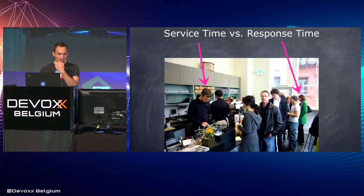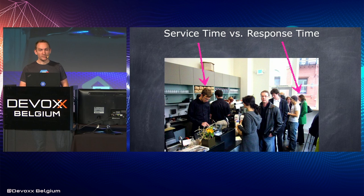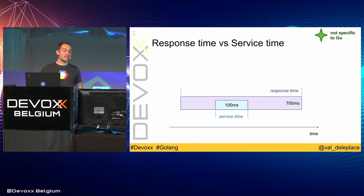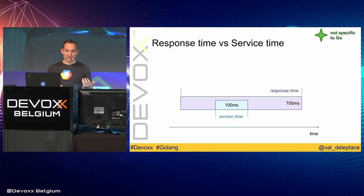This picture was taken from a great talk, 'How Not to Measure Latency' — I'll add the link at the end. The bottom line is: the important part you may be missing is the point of view of your users. The 100-millisecond service time might actually be embedded in a much lengthier 700-millisecond response time. That is what the user really cares about, and what we should care about.